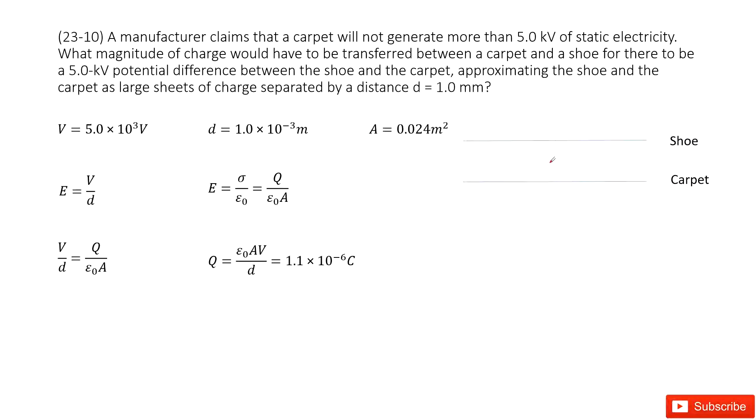So we can see we can consider the carpet and the shoes as two parallel planes. There's an electric potential difference V that is given, the distance between shoes and carpet is given, and also the shoe's cross-sectional area is given as A.